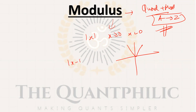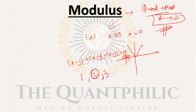For direct modulus questions: given something like |x-1| + |x+2| + |x+3| = y, where the question asks for the minimum value of y, you should arrange the critical points in ascending order — like 1, 2, 3 — and the minimum value occurs at the center-most point. Arrange them in order first.